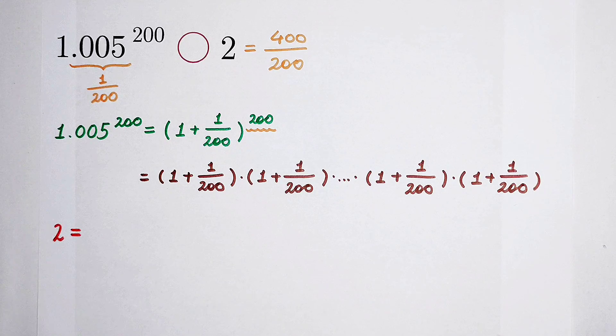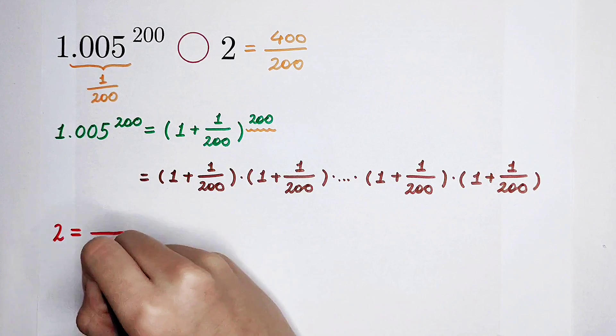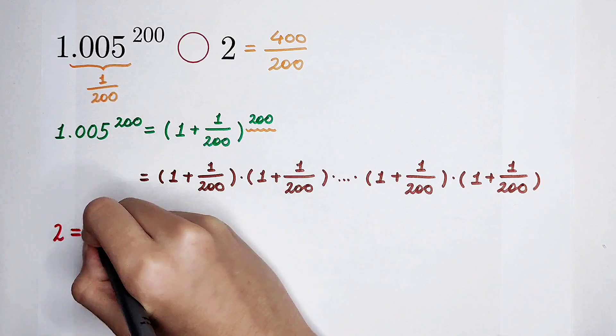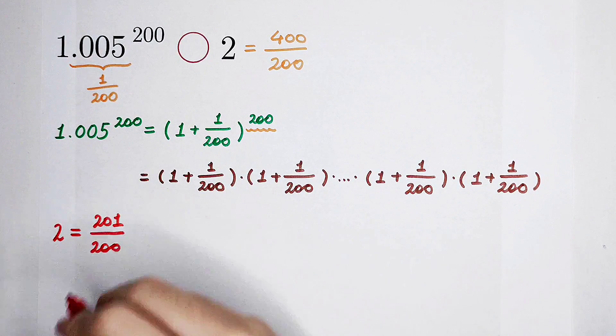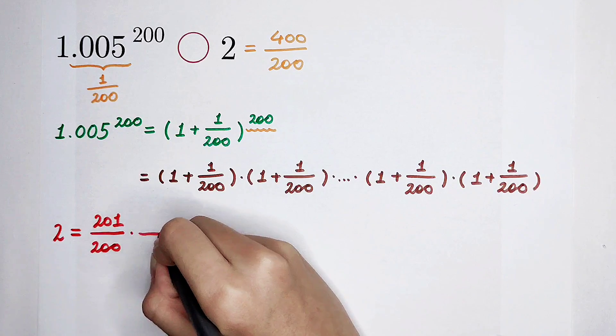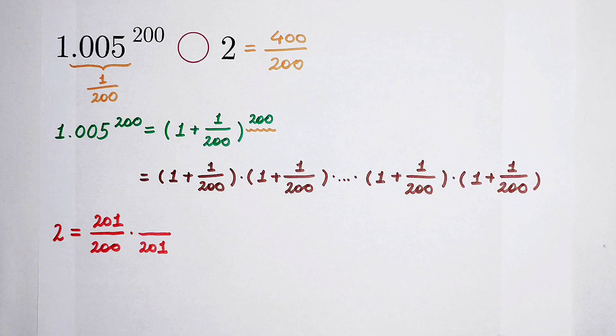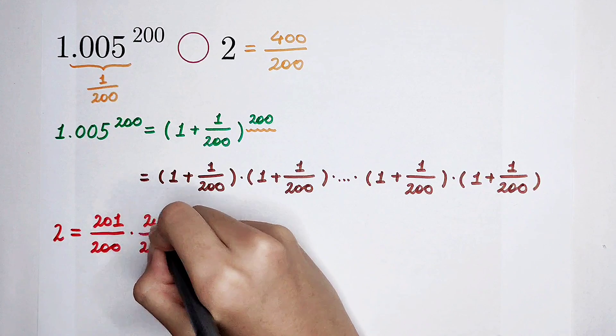I'm going to write this as, first, the denominator is 200, and the numerator I write as 201. And then times the second one, the second fraction: the denominator is 201, because, therefore, I can cancel them. And the numerator is 202.